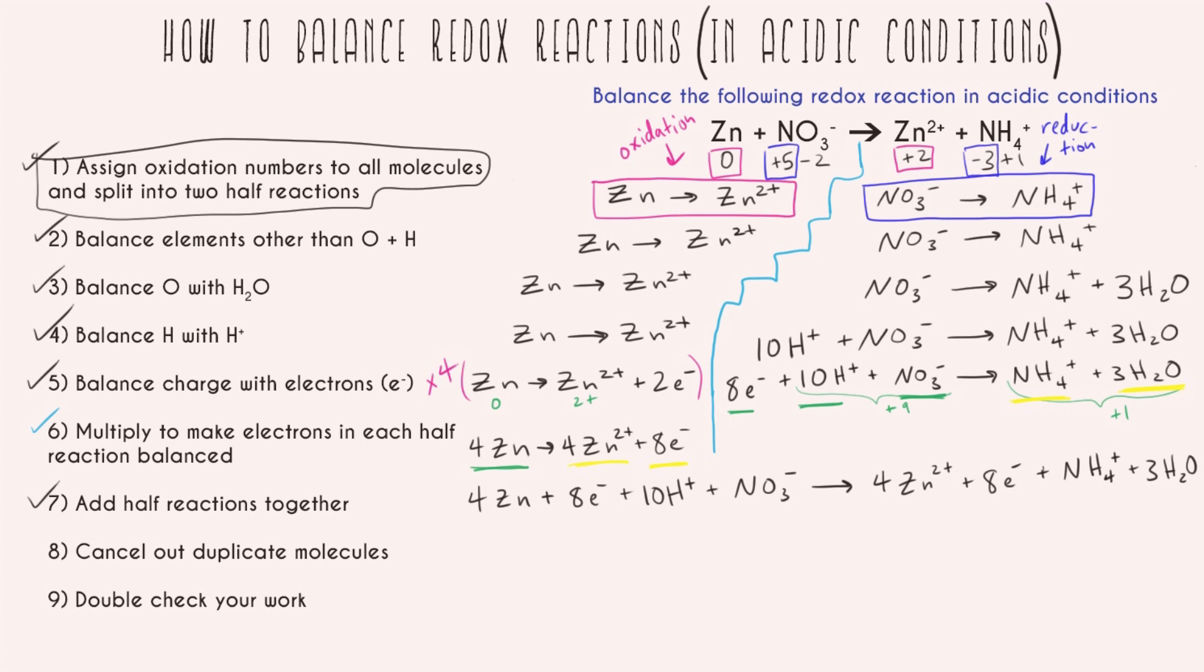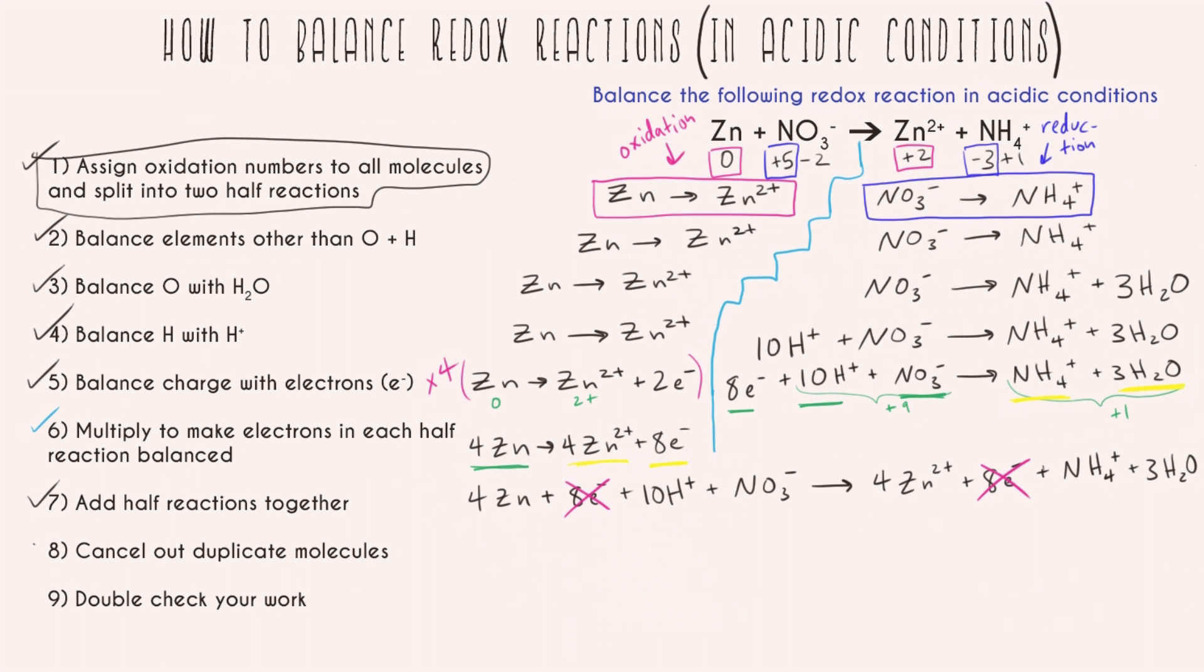So now I can go ahead and cancel out duplicate molecules. So just looking around, first I can get rid of these electrons, right? That's the whole point, we're not going to end up with just random electrons hanging out. And actually that's all I can cancel out, right? So in some of these problems you're going to have hydrogens on both sides or waters on both sides that are going to get canceled out. But in this case we didn't have that. So my final reaction looks like this. And this is completely balanced.